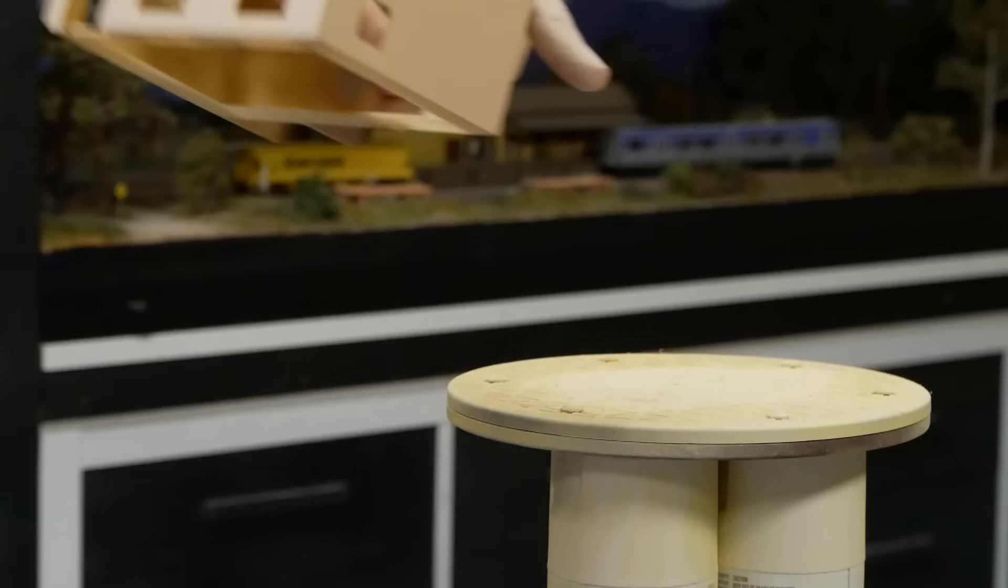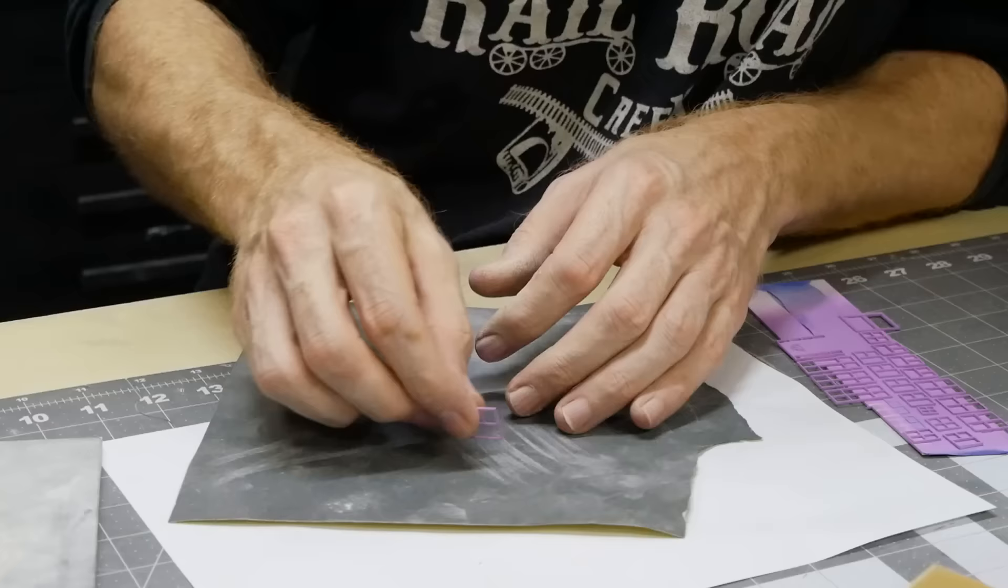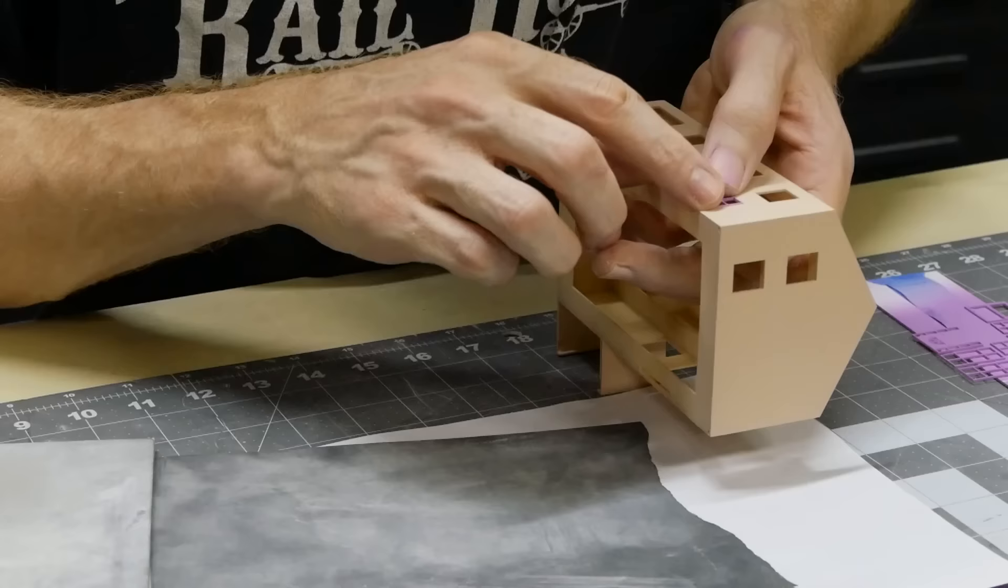Lastly the painted parts are sealed with Tamiya flat clear to protect them from scratches and other damage. The windows were quite a tight fit so they needed a little bit of sanding along the edges to remove built up paint so they would fit in the window openings nice and snug.